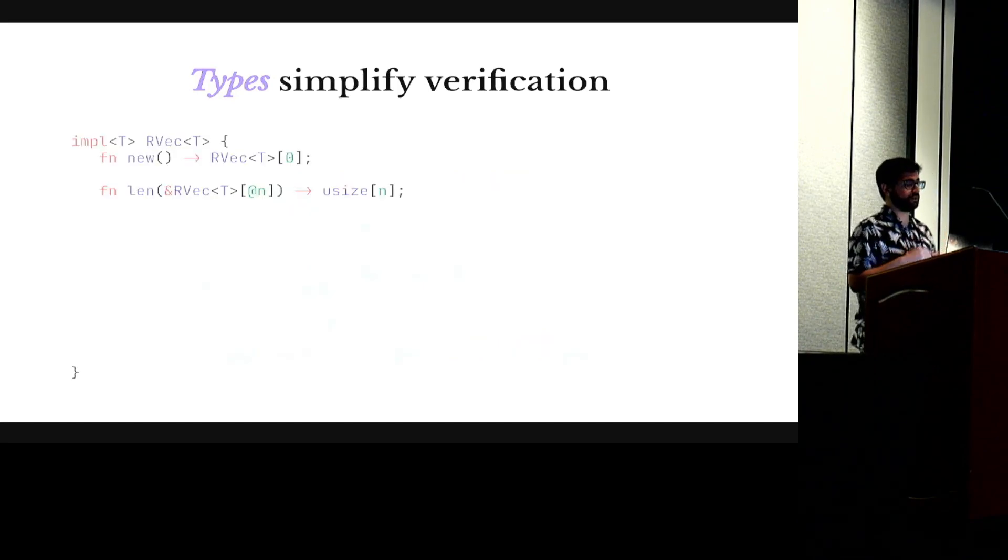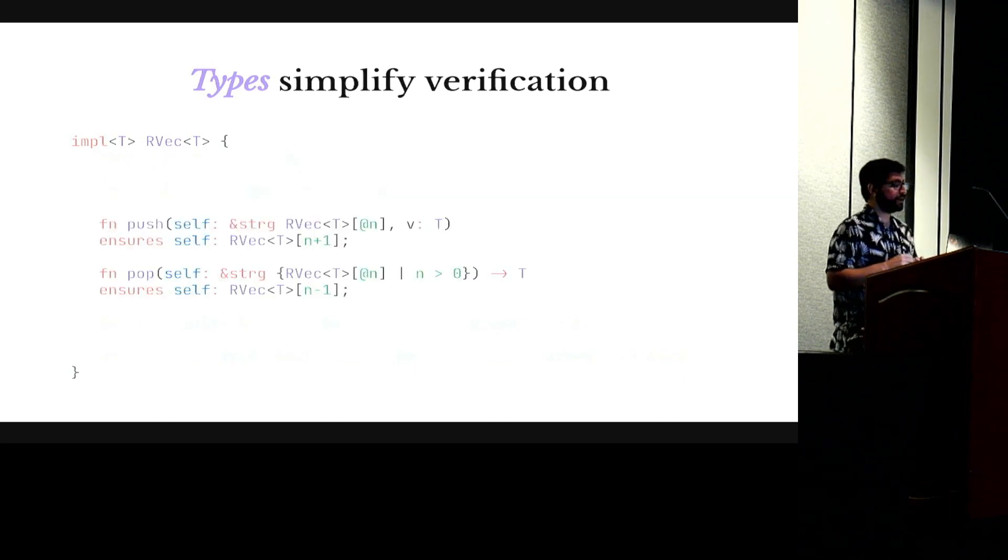These are some of the methods in the vector API. I'm going to go over some of them. So the function new constructs a new vector and the return type says it's an empty one. The length function gives me access to the length and the types specify that the output value is exactly equal to the length of the vector. The function push and pop use strong references to specify that the length of the vector at the output will be one plus or one minus what it was at the beginning. And the pop function also has a precondition saying that it cannot be called on non-empty vectors.